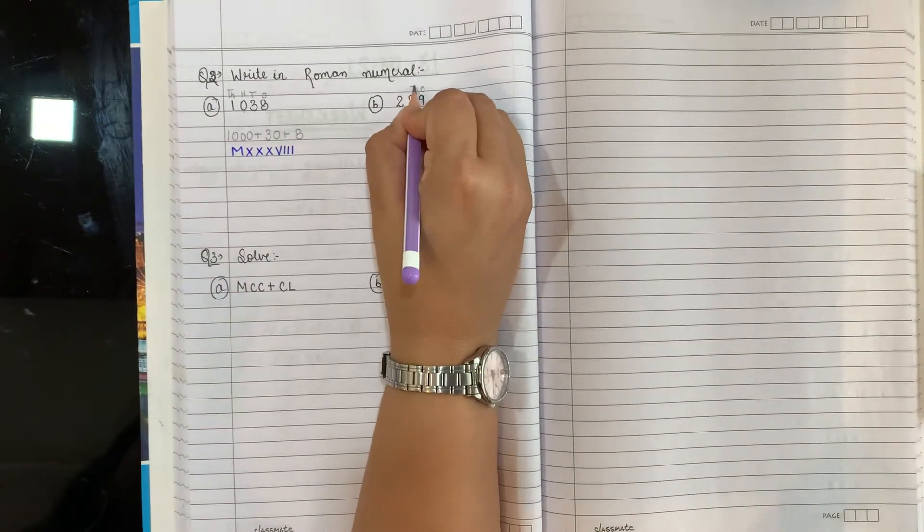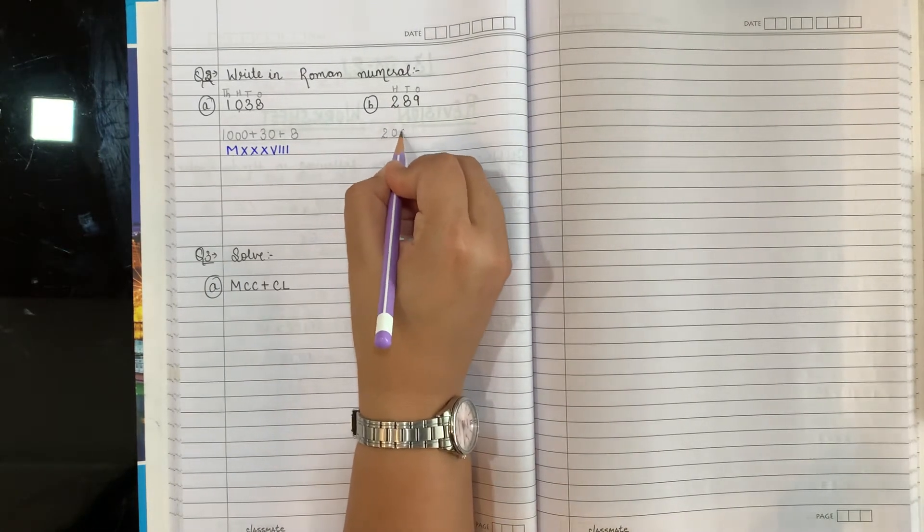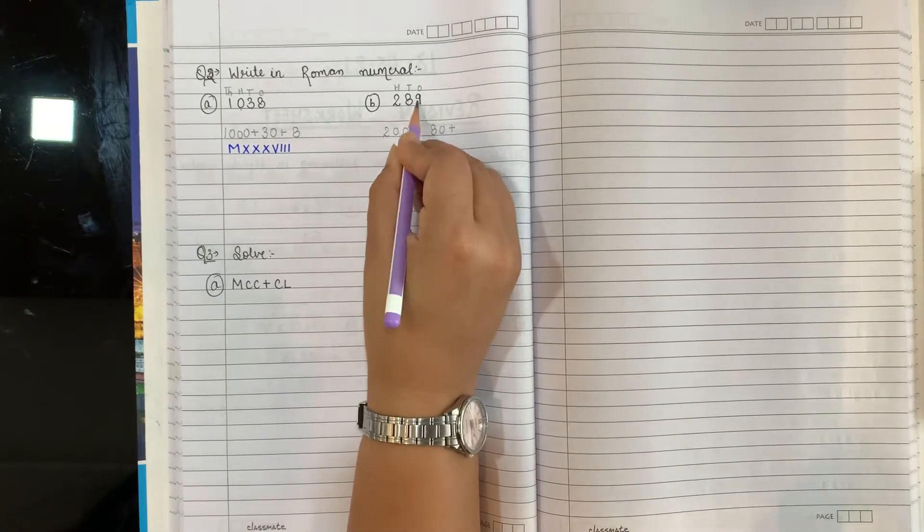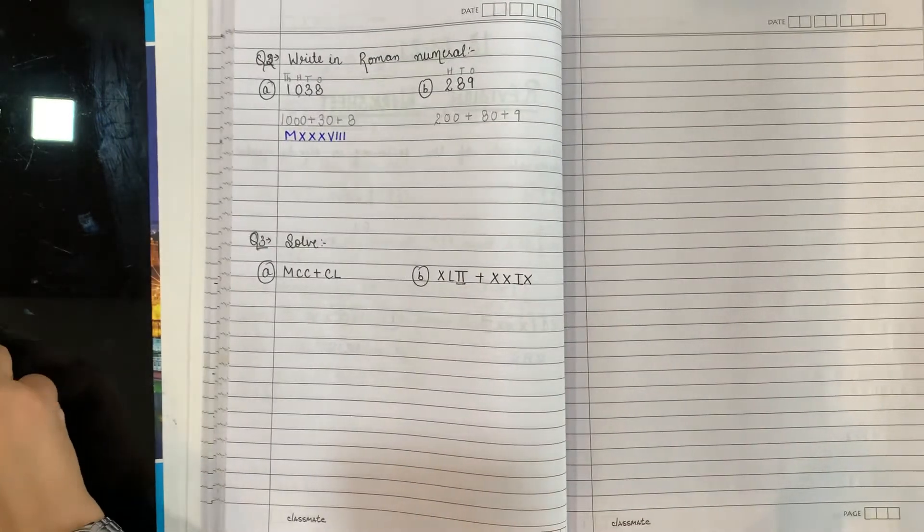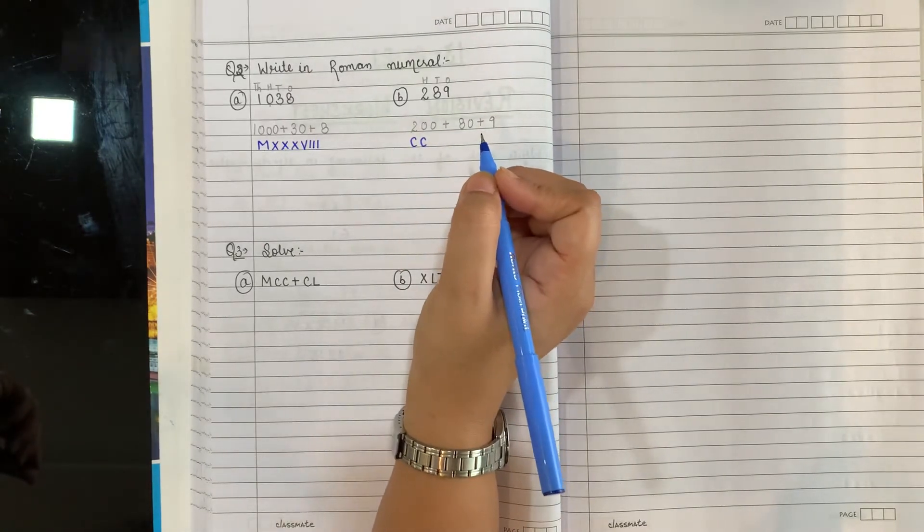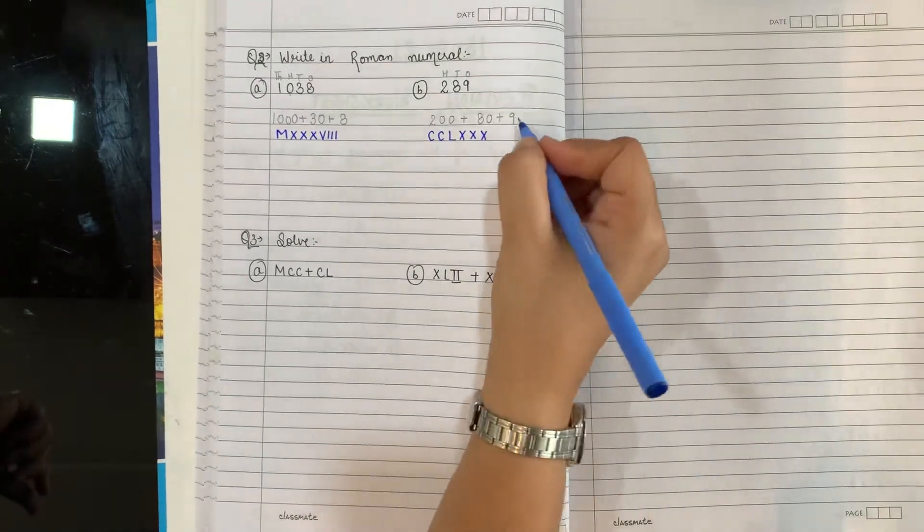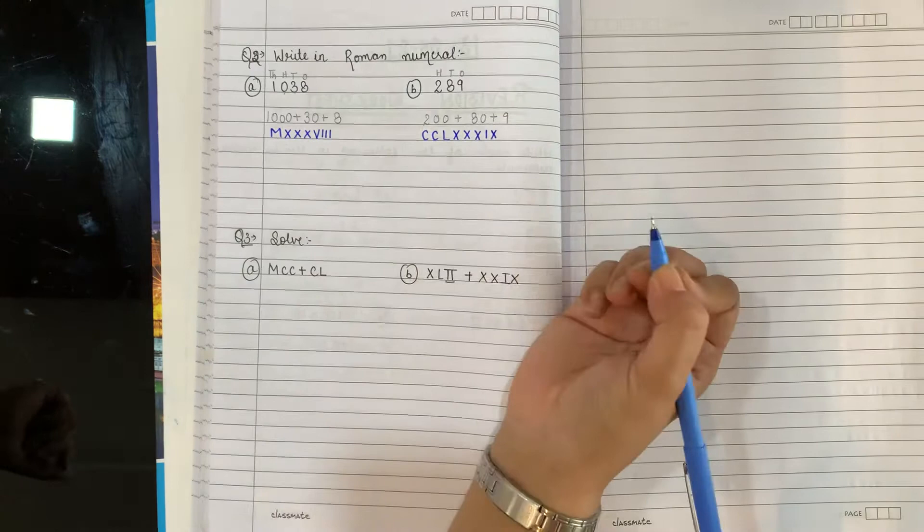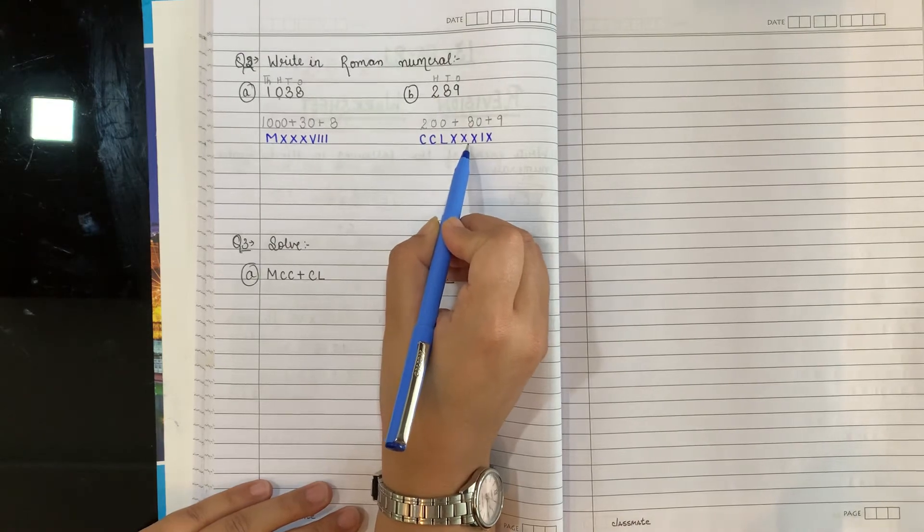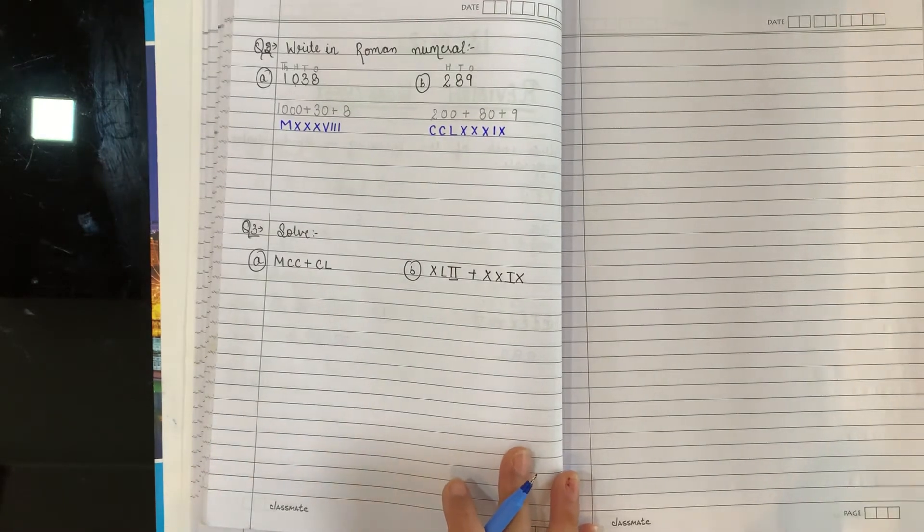Turn the page. Now you have to write in roman numeral. As I've taught you, how to write in roman numerals. First of all you need to expand it. Ones, tens, hundred, thousand. So 1 is at thousands place: 1000. No need to expand zero, because no matter how much you expand zero, it will remain zero. Then 3 is at tens place: 30. 8 is at ones place: 8. Now tell me how do we write 1000? 1000 is M. How do we write 30? 10, 20, 30. How do we write 8? 5, 6, 7, 8. So this is how we write 1038: MXXXVIII.